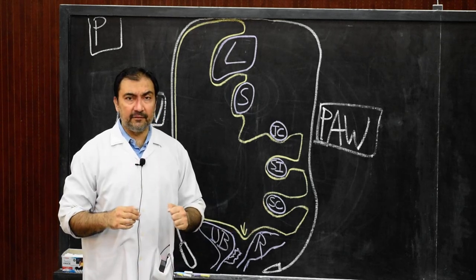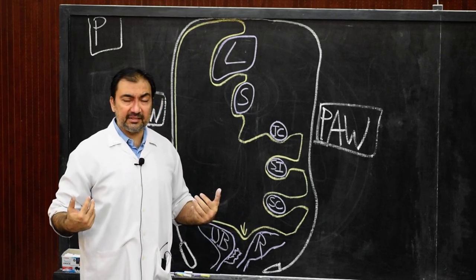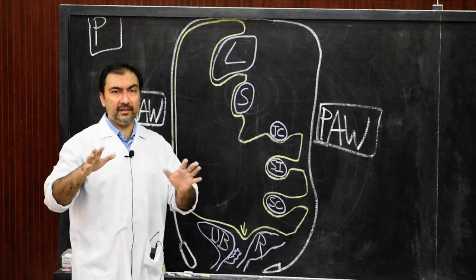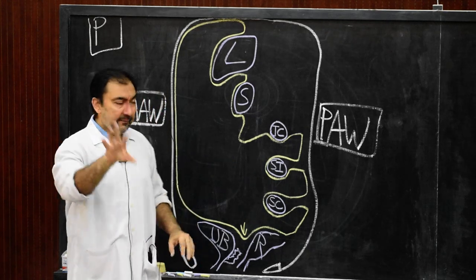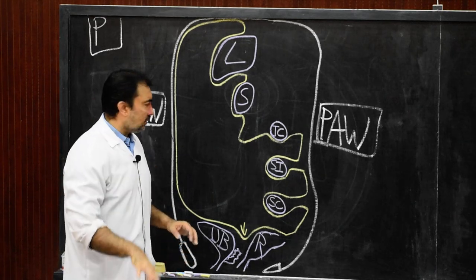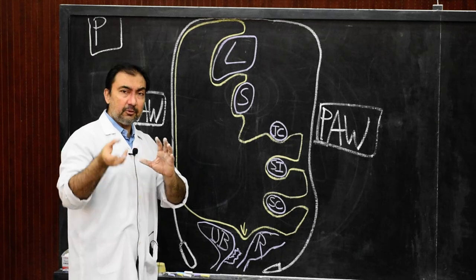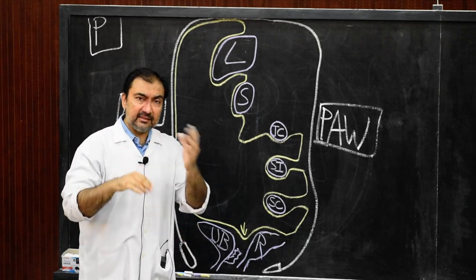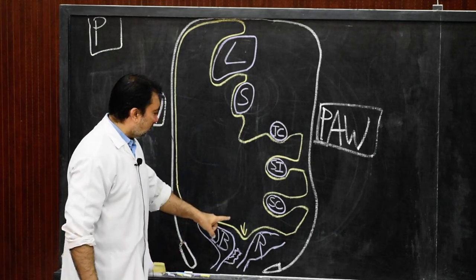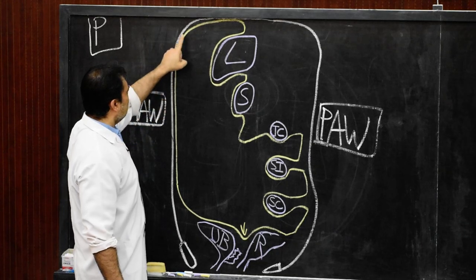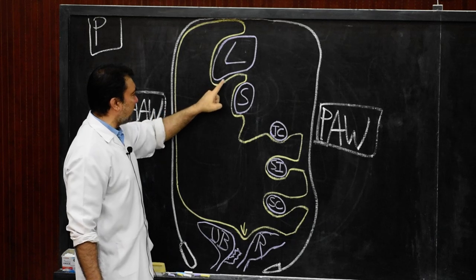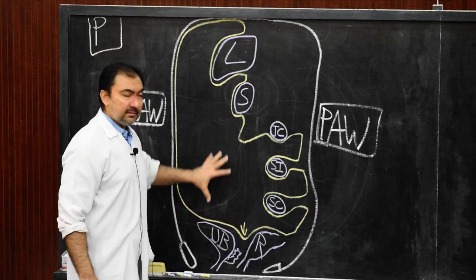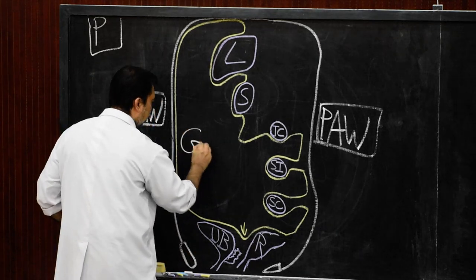Now, when we open the abdomen in dissection by reflecting the skin and opening the peritoneal cavity, we see that the entire peritoneal cavity is divided into two major parts: the cavity of the greater sac and the cavity of the lesser sac. Both cavities communicate with each other through one small opening. The enclosed cavity — where my hand is — is called the greater sac.